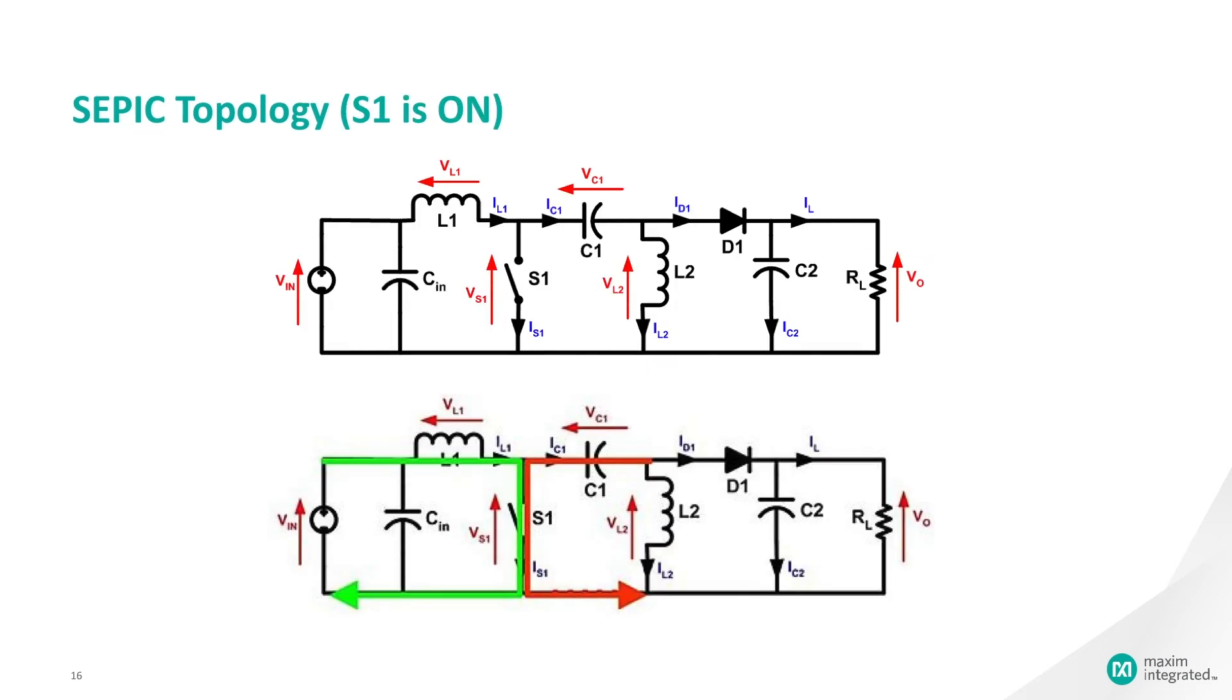When switch S1 is turned on, current IL1 increases and the current IL2 goes more negative. Mathematically, it decreases due to the direction. The energy to increase the current IL1 comes from the input source. Since S1 is a short while closed, and the instantaneous voltage VC1 is approximately VN, the voltage VL2 is approximately minus VN. Therefore, the capacitor C1 supplies the energy to increase the magnitude of the current in IL2, and thus increase the energy stored in IL2. The easiest way to visualize this is to consider the bias voltages of the circuit in a DC state, then close S1.